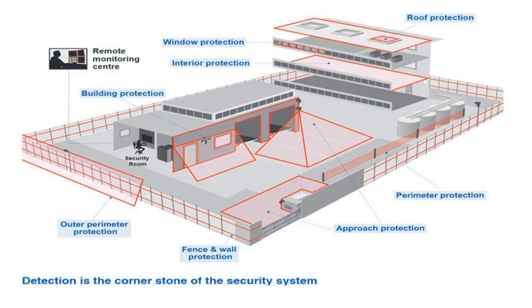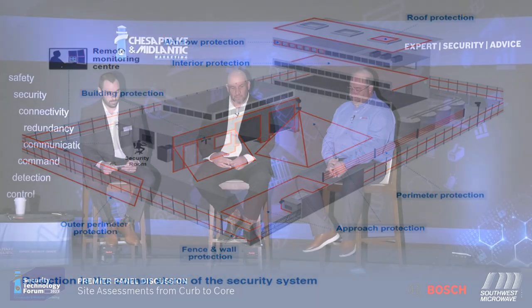Curb to core — what do you see the meaning of that and how would you explain it? Well, looking at this slide, the common thought is maybe it's your fence line or your perimeter to the inside. But Anthony and I have discussed this in depth, and it's well beyond that. It depends on your individual site. There are a lot of parameters to consider for where your curb side starts. It could be a road, it could be the neighborhood, it could be a CSX rail yard right beside it.